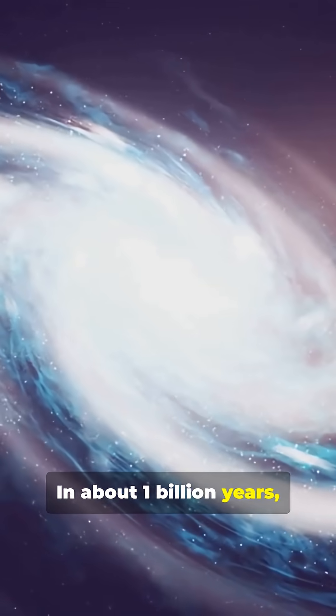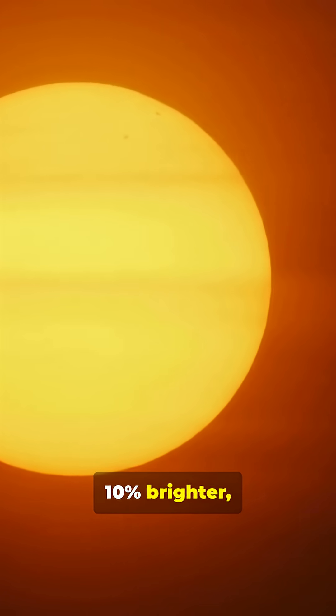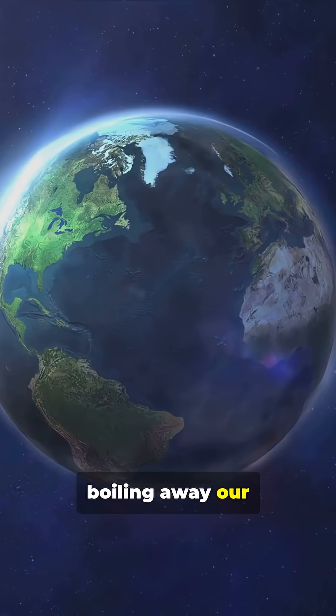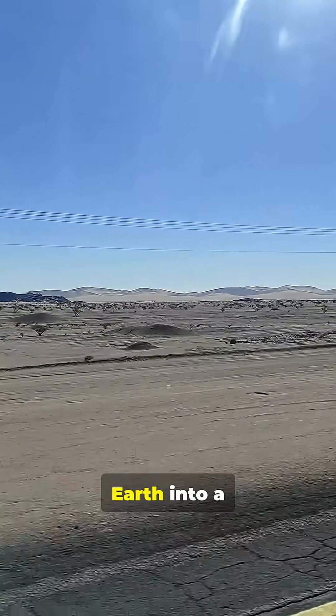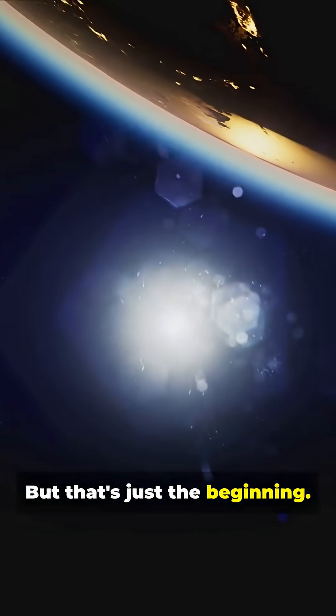In about 1 billion years, the Sun will get 10% brighter, boiling away our oceans and turning Earth into a lifeless desert. But that's just the beginning.